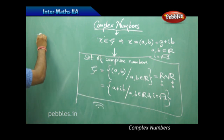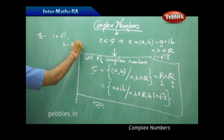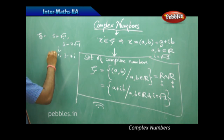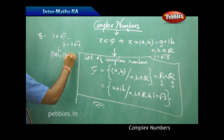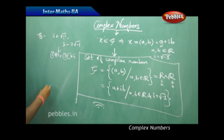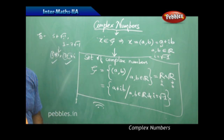For example, 5 + √(−1) and 3 − 7√(−1) are complex numbers. Since √(−1) = i, these can be written as 5 + i and 3 − 7i, where the real parts are 5 and 3 and the imaginary parts are 1 and −7 — all real numbers. Therefore they are in the form a + ib and are complex numbers.